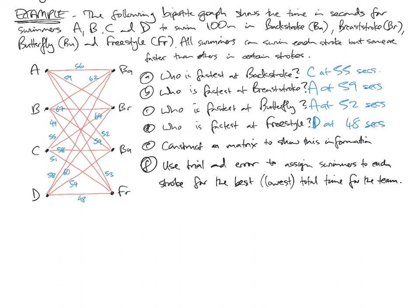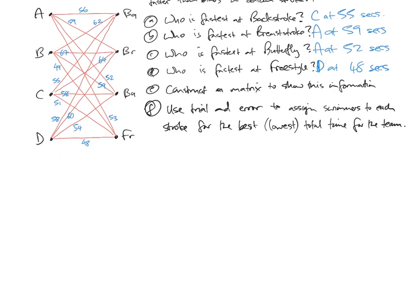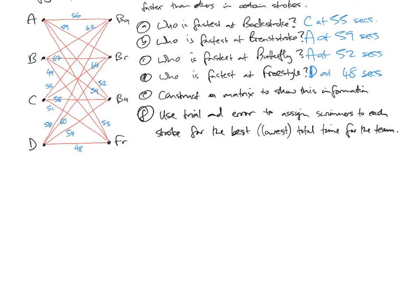Construct a matrix to show this information. So this is the main gist of this video, the construction of this matrix. It doesn't matter which way you do it, but rows represent one of the groups on the bipartite graph, columns represent the other group. So I'm going to do the rows representing the swimmers A, B, C, D, and the columns representing the strokes: BA for backstroke, BR for breaststroke, BU for butterfly, and FR for freestyle. I'm going to draw lines here to just help line things up.